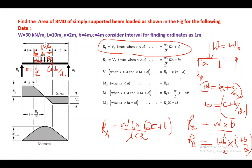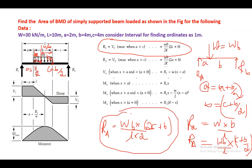The formula is: for a simply supported beam with a point load, RA = WB/L and RB = WA/L. Using this formula, you get R1 = WB(2C + B)/(2L). Similarly, R2 = WA/L, where A = A + B/2, giving you the value of R2.